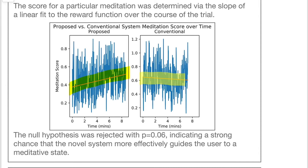There is a clear trend upward in this example from the proposed system, while we observe a more neutral trend in the conventional system. To form our conclusions, we applied a z-score analysis on the dataset composed of the slopes of the meditation score over time from each trial. We found p equals 0.06 for the null hypothesis that there was either negative or no difference between the two systems, indicating that the proposed system functioned better than the conventional neurofeedback system for promoting a meditative brain state.